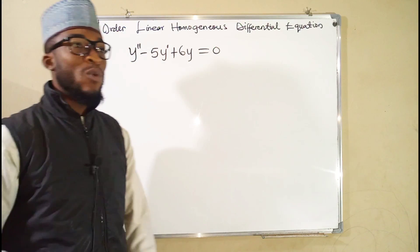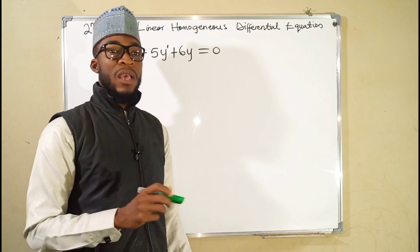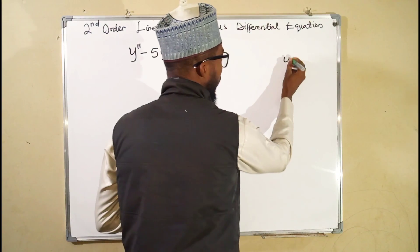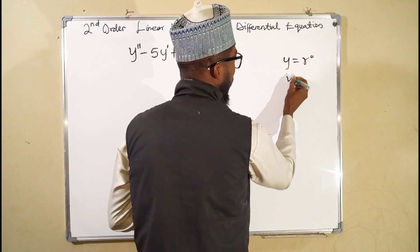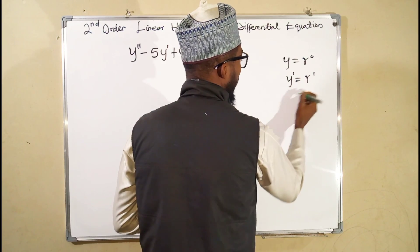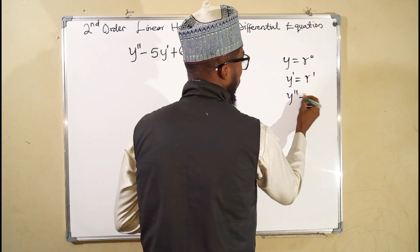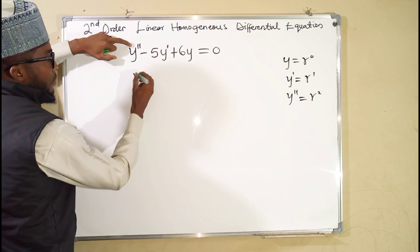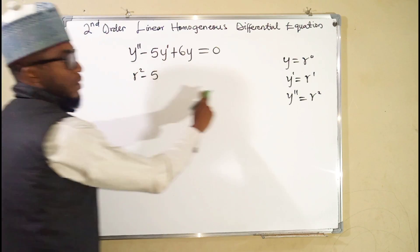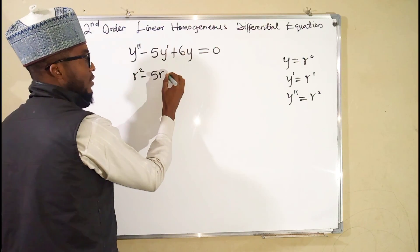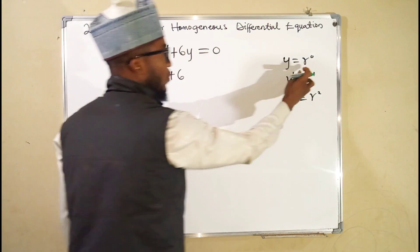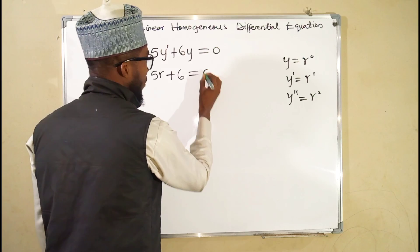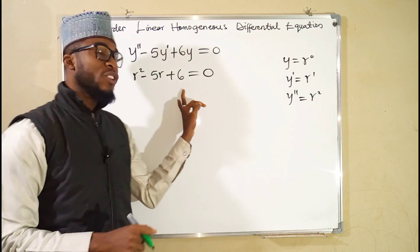The first thing you need to do is transform the equation into an auxiliary or characteristic equation by replacing y with r^0, y' with r^1, and y'' with r^2. So we get r² - 5r + 6 = 0. Since r^0 equals 1, the constant term stays as 6. This is our characteristic equation and we want to solve for r.